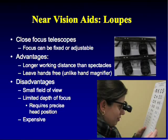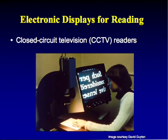Loops offer even higher magnification — they are essentially telescopes with a near add, giving a longer working distance and leaving both hands free. However, depth of focus is limited requiring precise head position, the field of view is smaller, they are costly, and some patients, including elderly low vision patients, don't want such a conspicuous device.